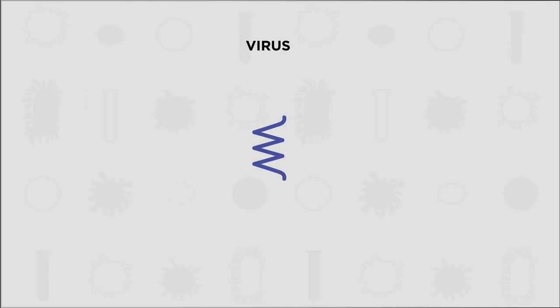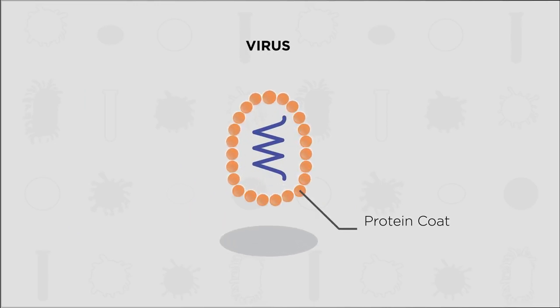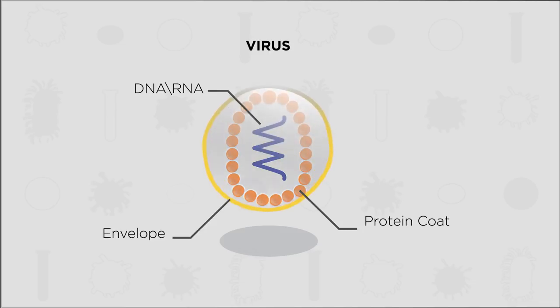Viruses are very simple. They are made up of a protein coat surrounding a strand of genetic material. The genetic material can either be DNA or RNA. Sometimes a membrane called an envelope surrounds a virus particle. This envelope isn't made by the virus, but is actually stolen from the membrane of the host cell, making it harder for the host cell to identify the virus as foreign.